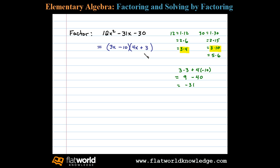Now let's check our middle term. In fact, let's check the whole factorization. We check by multiplying: 3x times 4x is 12x squared, 3x times positive 3 is plus 9x, negative 10 times 4x is minus 40x, and then negative 10 times plus 3 is negative 30.